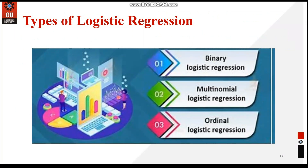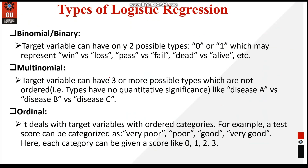The types of logistic regression are: binary logistic regression (also known as binomial), where the target variable can have two possible values such as 0/1, yes/no, win/loss, pass/fail; and multinomial logistic regression, where the target variable can have three or more possible output types that are not ordered.